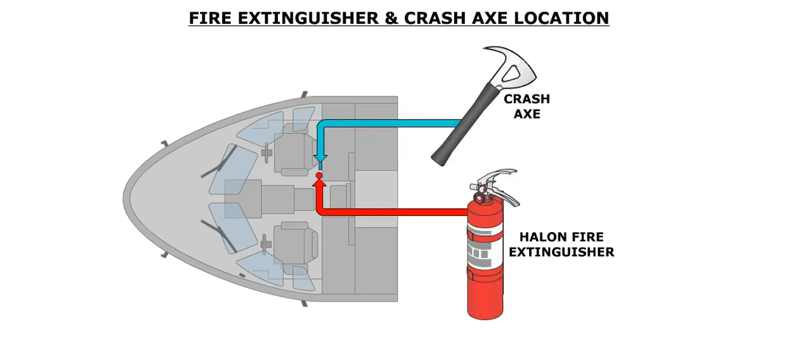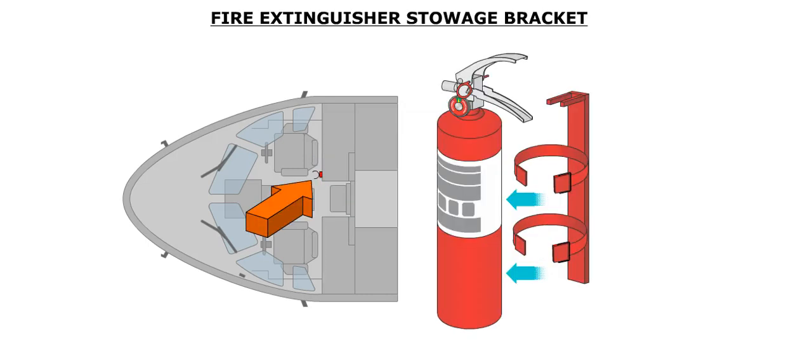A halon fire extinguisher and a crash axe are located at the bottom of the electric rack, in the left side of the cargo compartment. The halon fire extinguisher is mounted on a stowage bracket with a retaining collar that can be quickly disconnected.